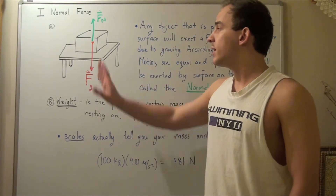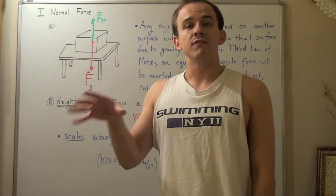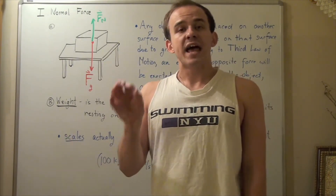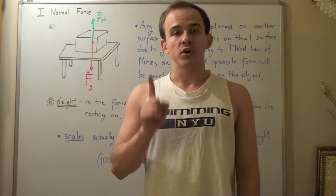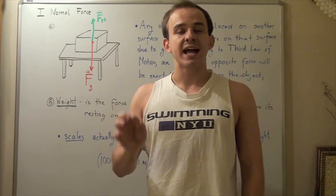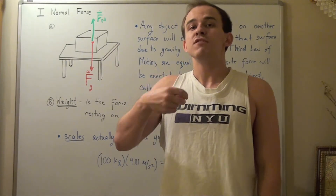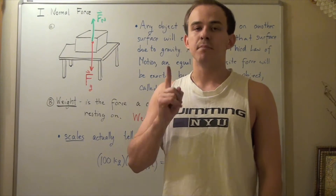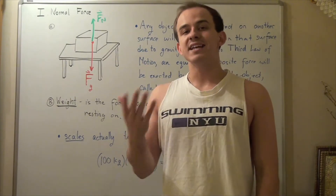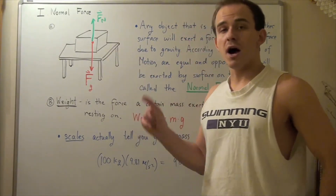Let's look at the following illustration. Suppose we have some box of mass m resting on a table which itself is resting on the ground. Now note that if you place any box on any table, that box will not move. So that means according to the first law of motion, if this box remains stationary, no net force is acting on that box.